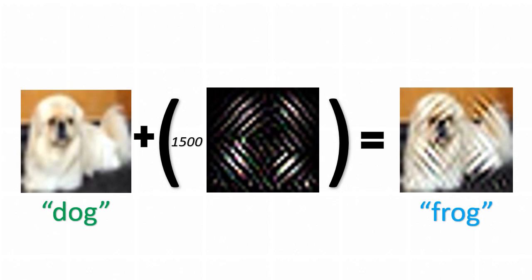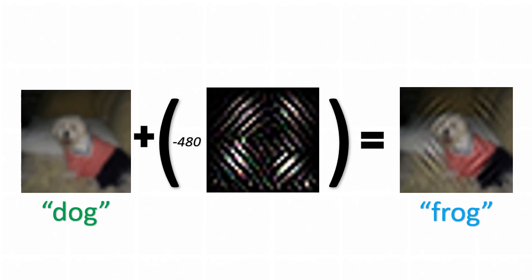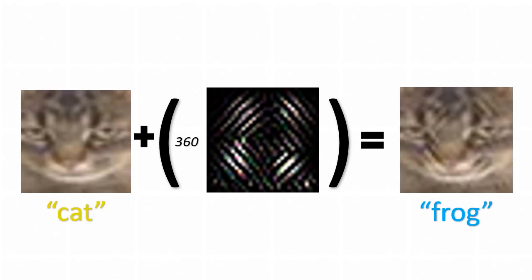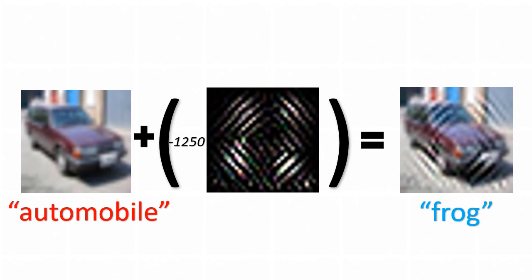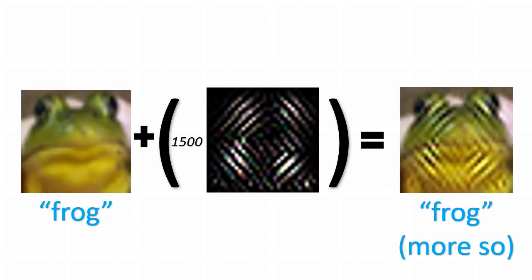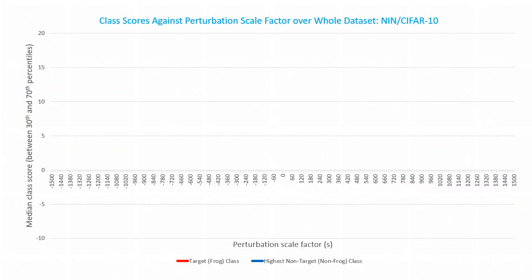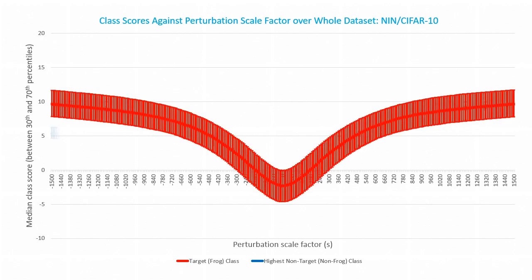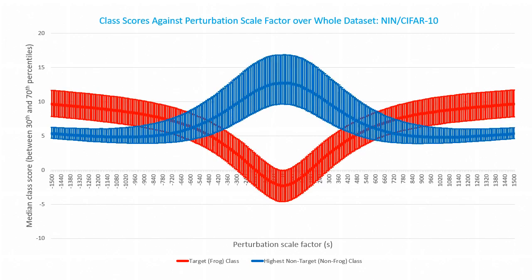There's nothing special about this particular dog image. The same thing happens with this dog, or for that matter, with nearly any other image in this dataset, except for frogs, which don't change their identity. This trend is evident at the population level. Here are the class score percentile lines for the entire dataset as a function of the scaling factor — frog score in red, highest scoring non-frog in blue. Notice the crossover of the curves. In other words, this is a frog class targeting universal adversarial perturbation.